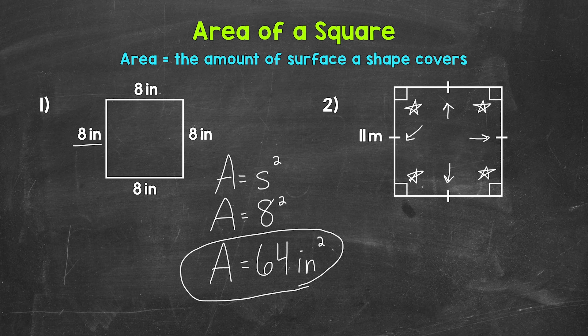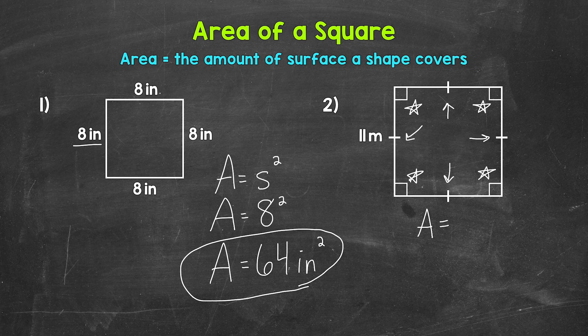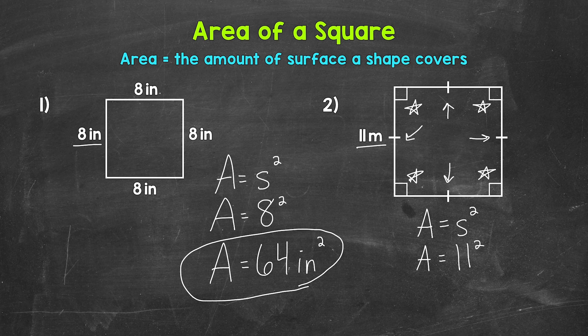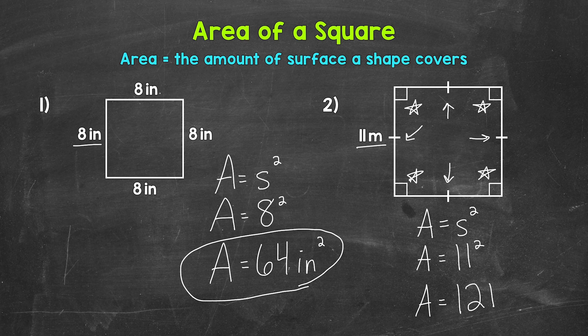As far as area, let's use the formula area equals a side length squared. And each side is 11 meters, so let's plug in 11 meters for the side length. So 11 squared, that means 11 times 11. That gives us an area of 121 square meters.